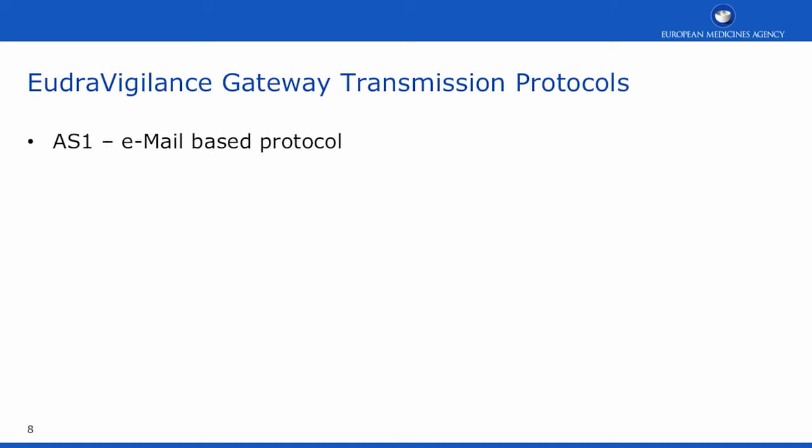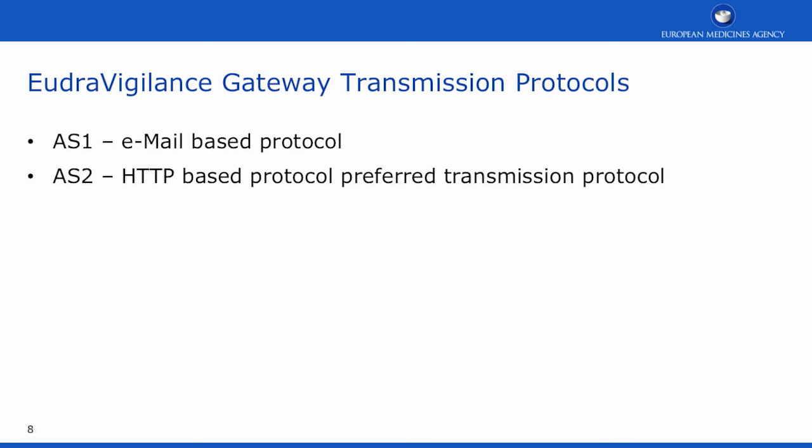The EudraVigilance gateway uses two protocols. AS1 is an email-based protocol, and AS2 is an HTTP-based protocol and is the preferred transmission protocol to be used in the gateway.